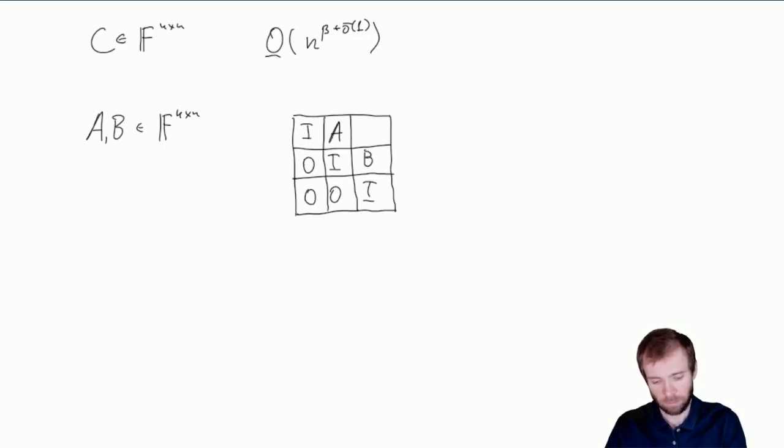Here we have three identity matrices of order n. Here we have A, B, and 0. And now let's take this matrix as C. Well, this is a 3n by 3n matrix.